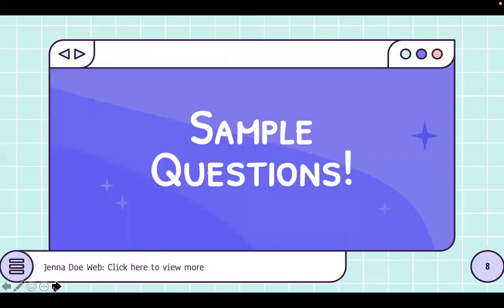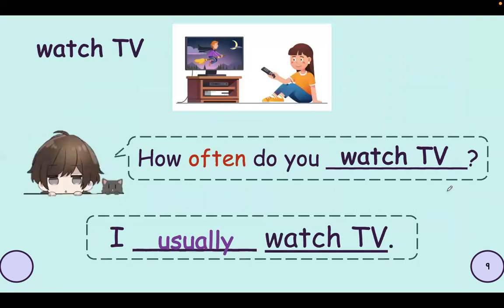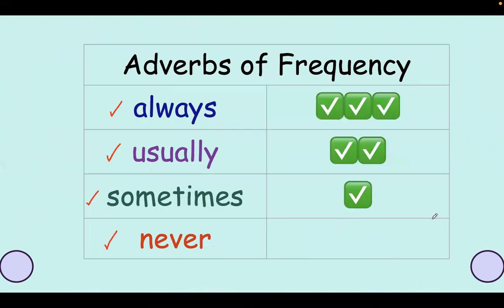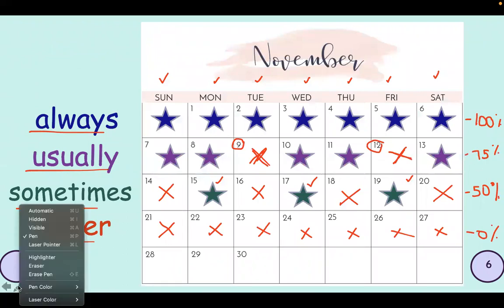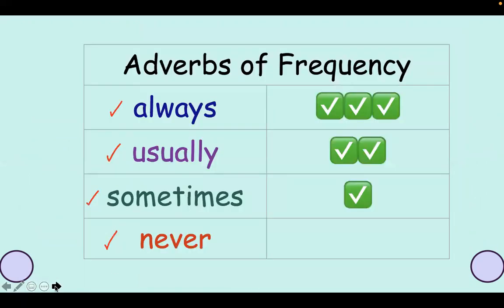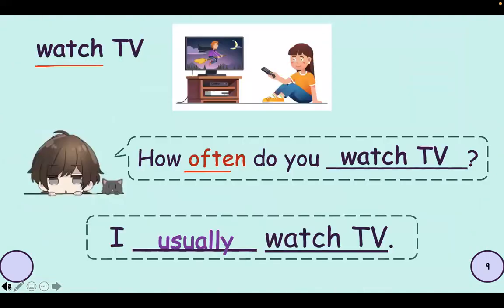So, example questions. Let's have this action: watch TV. How often — if you see this phrase, it means it's asking how many times do you watch TV? How many times in a week or in a day do you watch TV? So if we say I usually watch TV, she watches TV like 75% of the time. You could also say: How often do you watch TV? I always watch TV — like every day, Monday to Sunday, I watch TV.